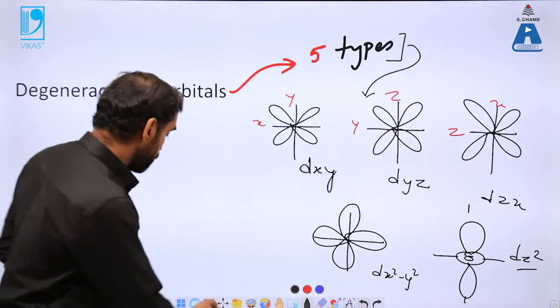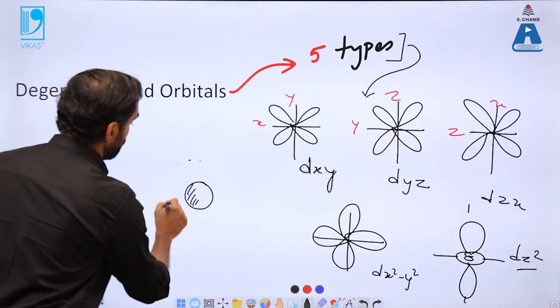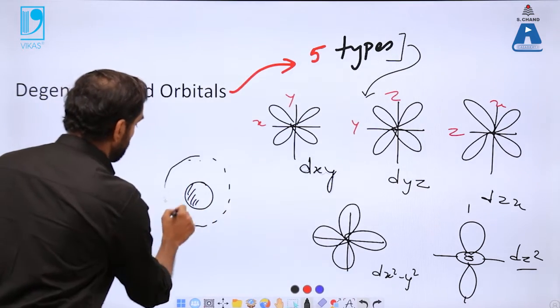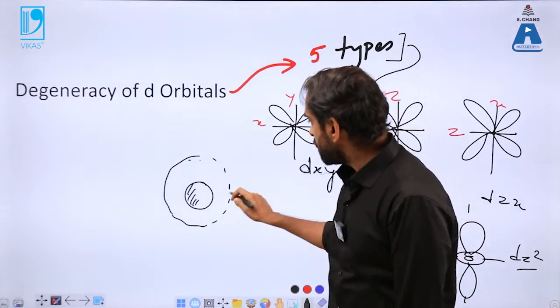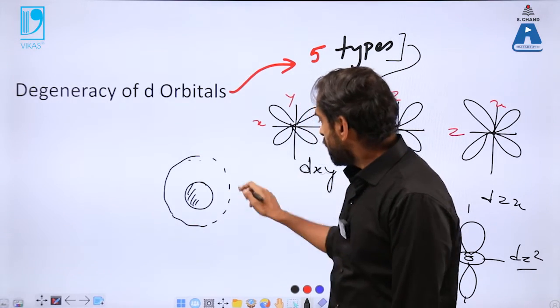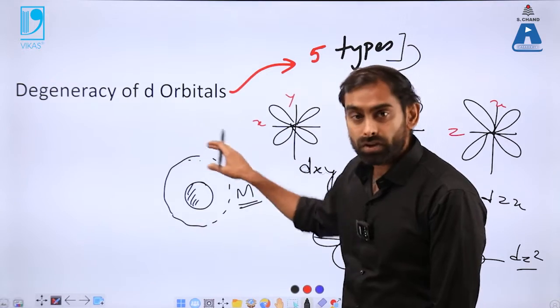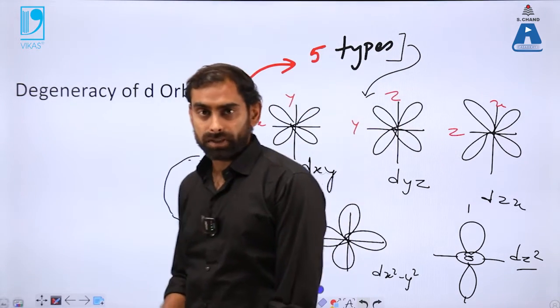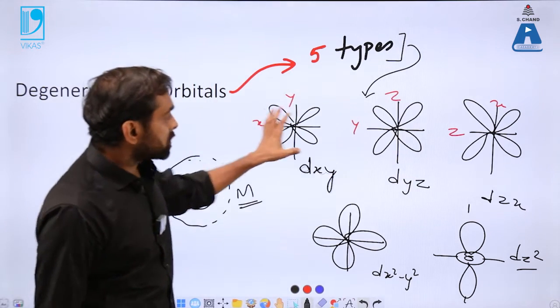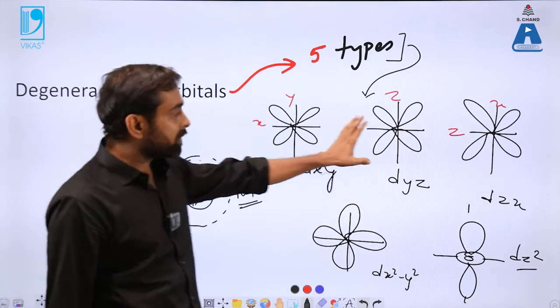So these five degenerate d orbitals are likely to have same energy. That means if an atom is having electron in d orbitals, which will be spinning in the third orbit, so they will be in m orbit or third orbit. All the electrons will be present in d sub shells or d orbitals.